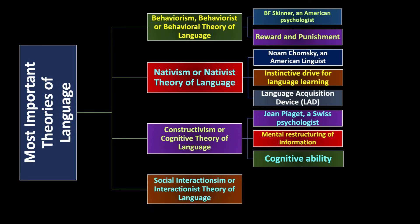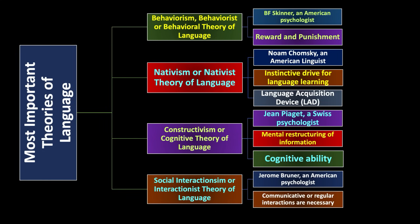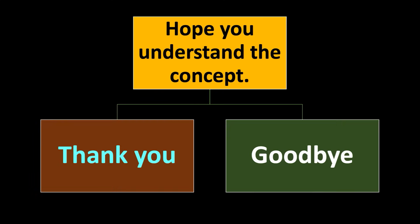The fourth theory is social interactionism, or the interactionist theory of language. The person who propounded this theory is Jerome Bruner, an American psychologist. The most important idea in this theory is that communicative or regular interactions are necessary for language development and language learning. In brief, we have come to know the major aspects of the most important theories of language.